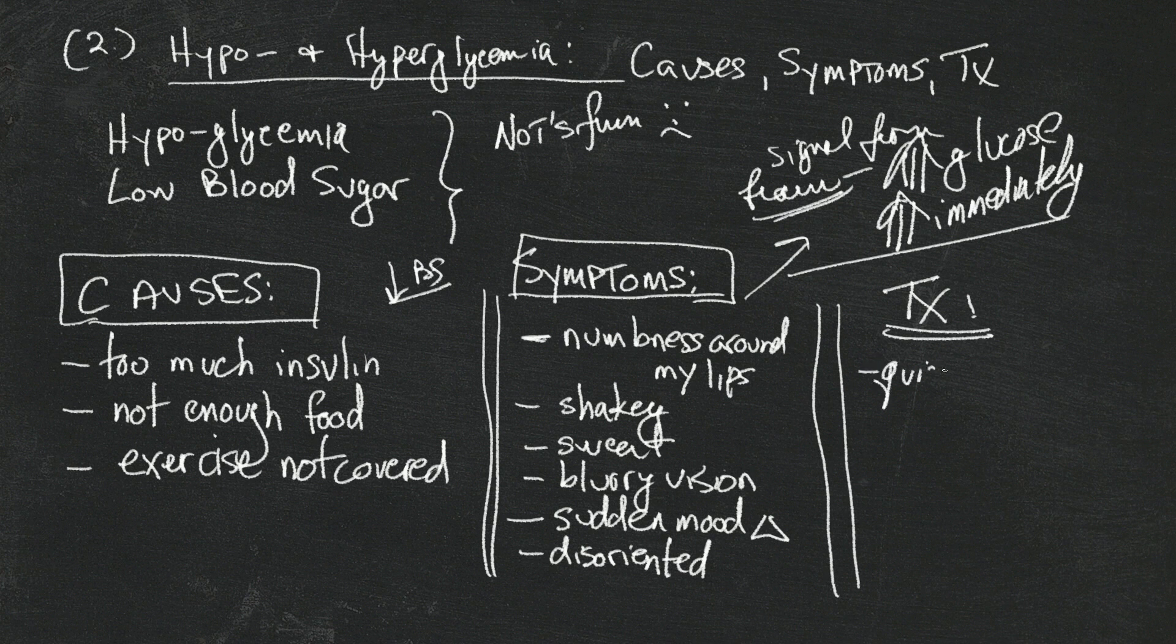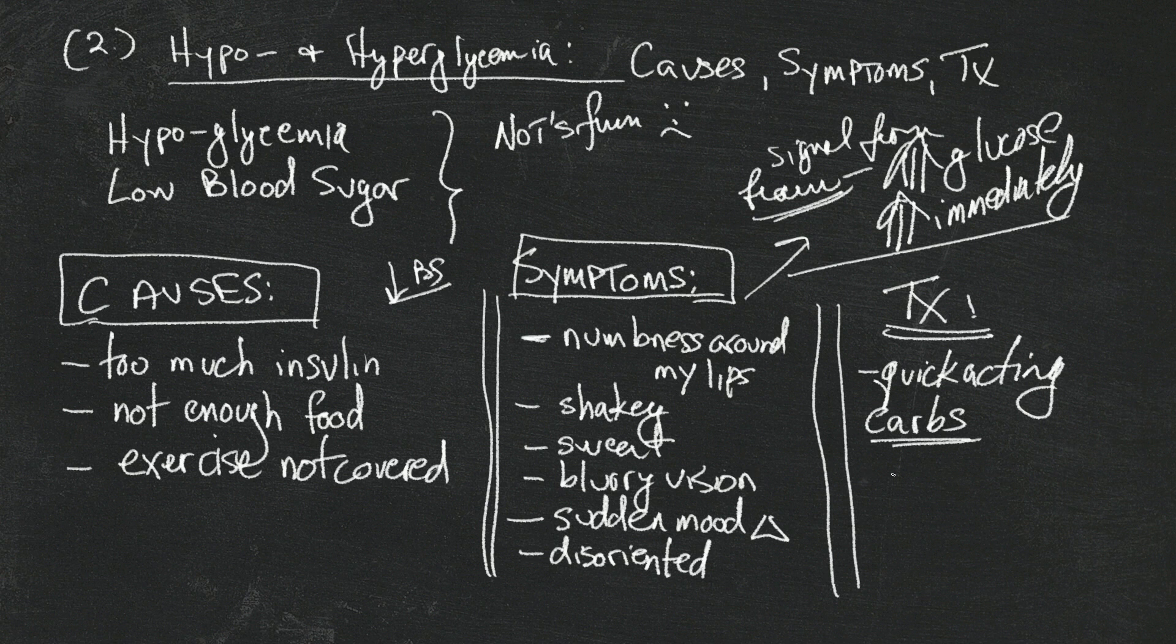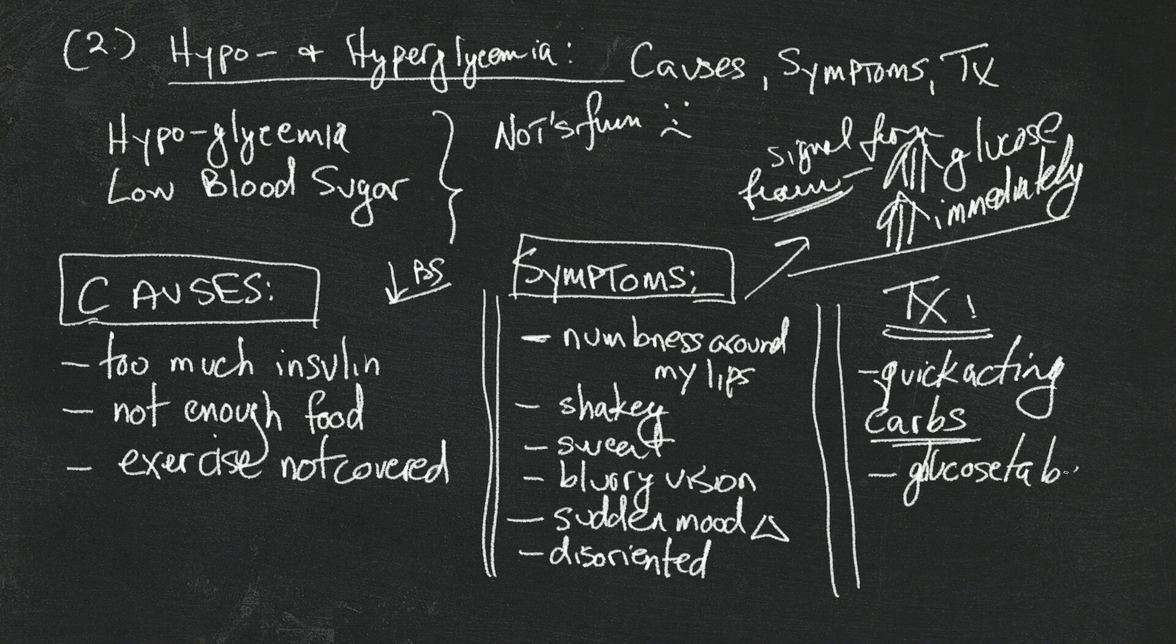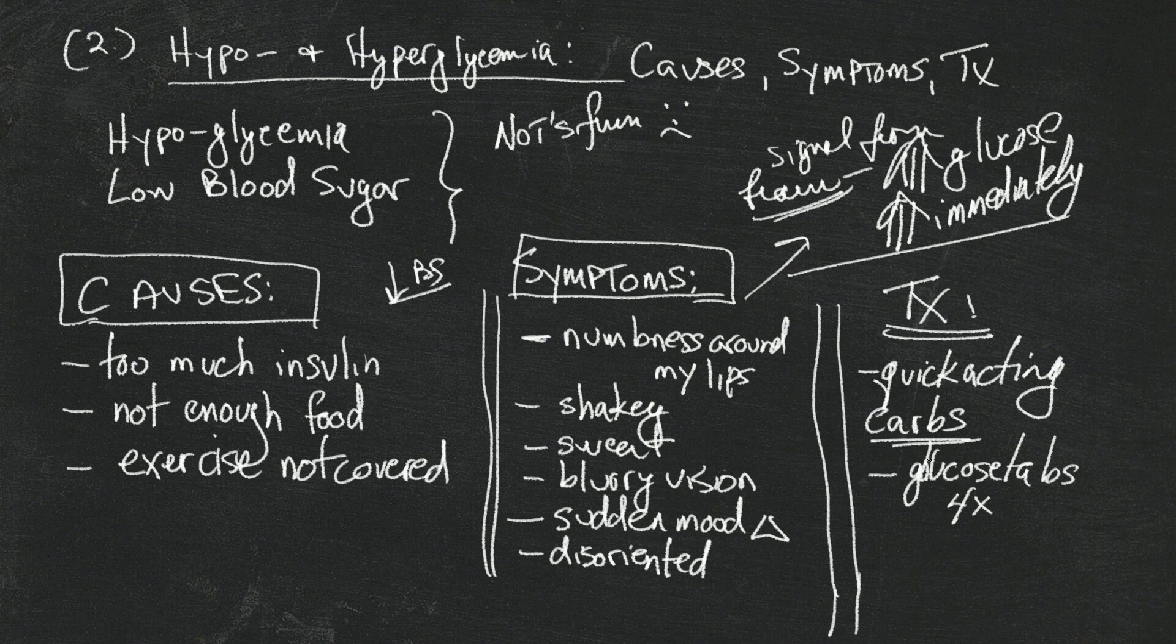So what is the treatment for low blood sugars? Quick acting carbohydrates. So glucose tablets - you'll get used to those, they come in various flavors, some good, some bad. But about four of them will work for you. Those work the most quickly for me and they're the most effective.